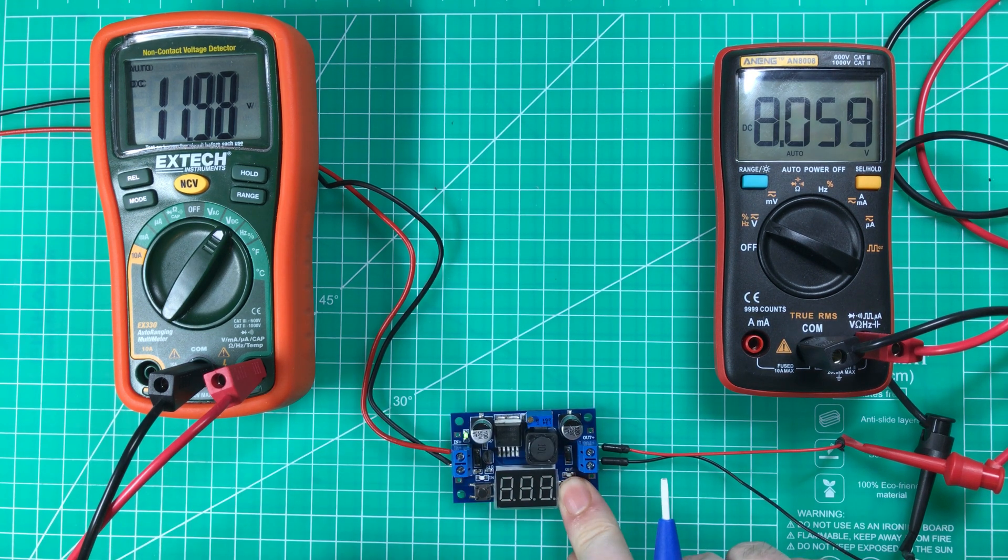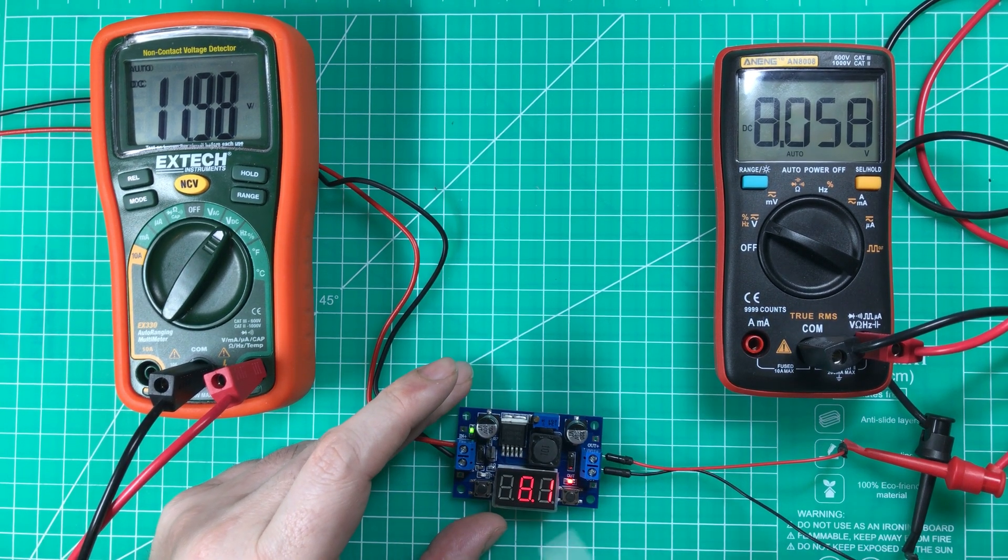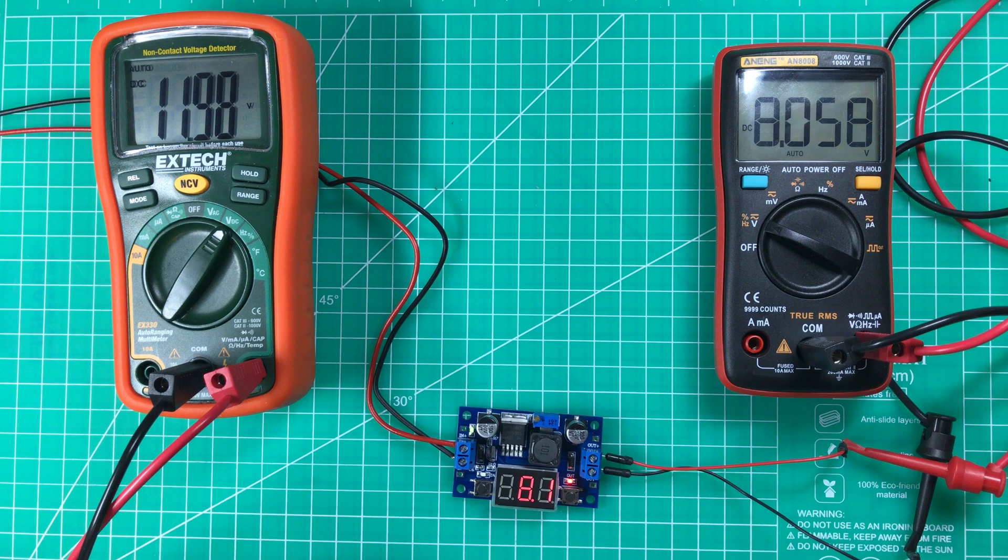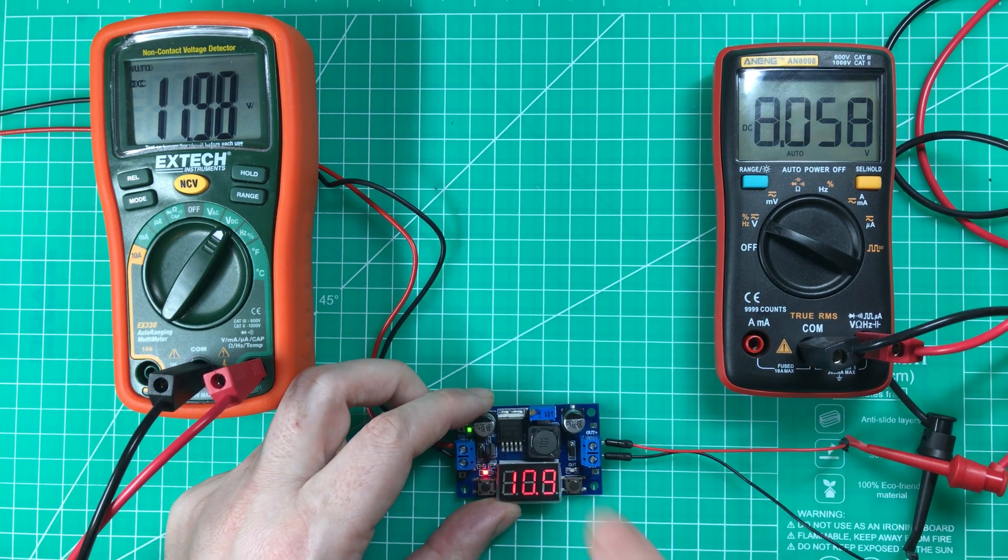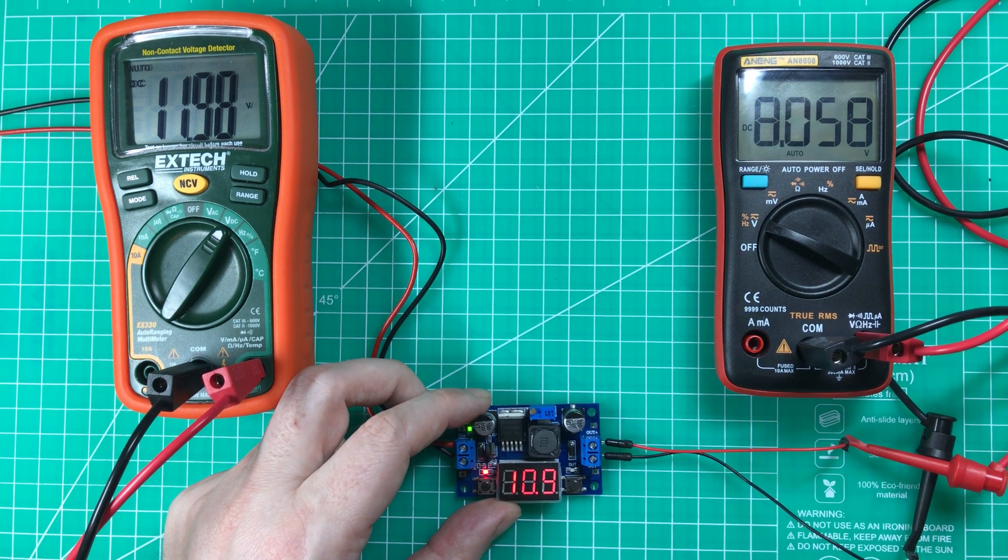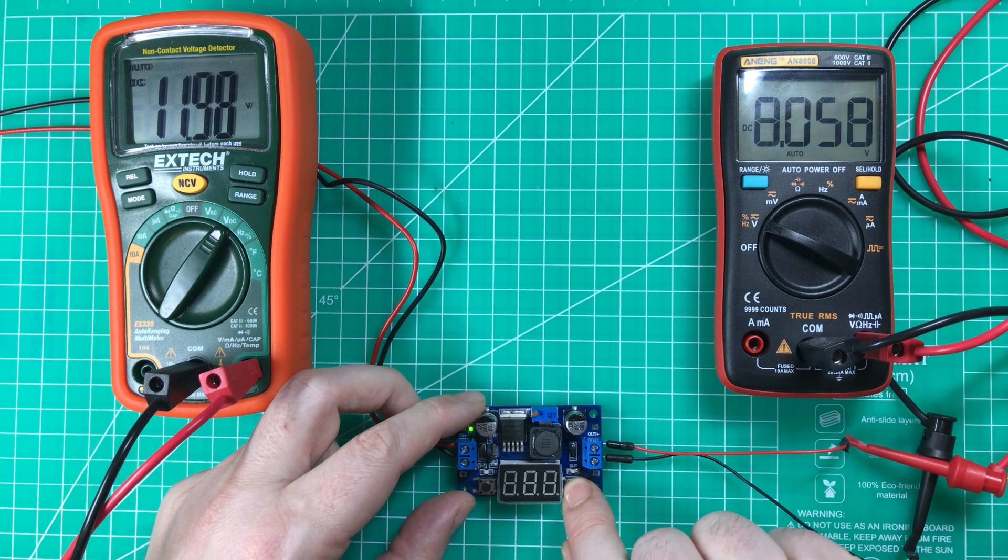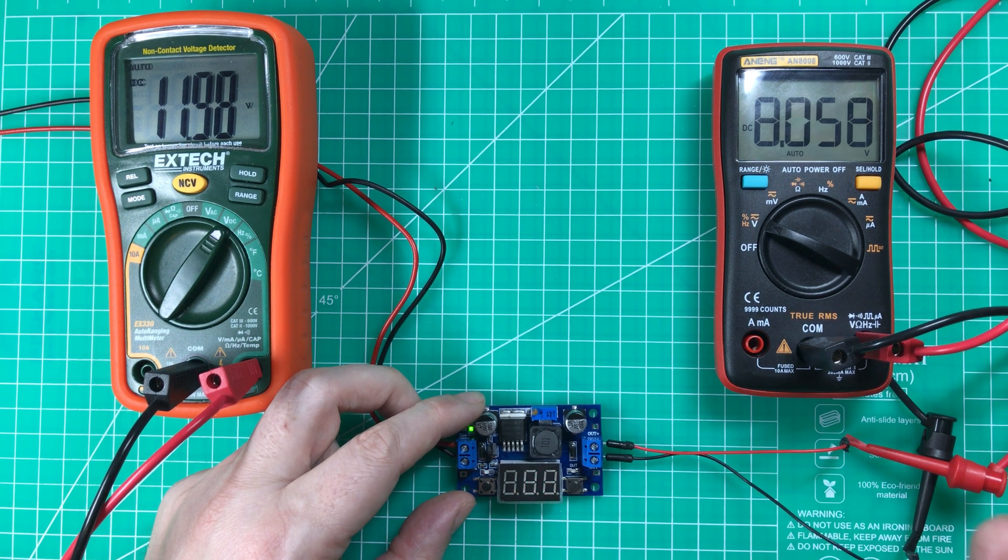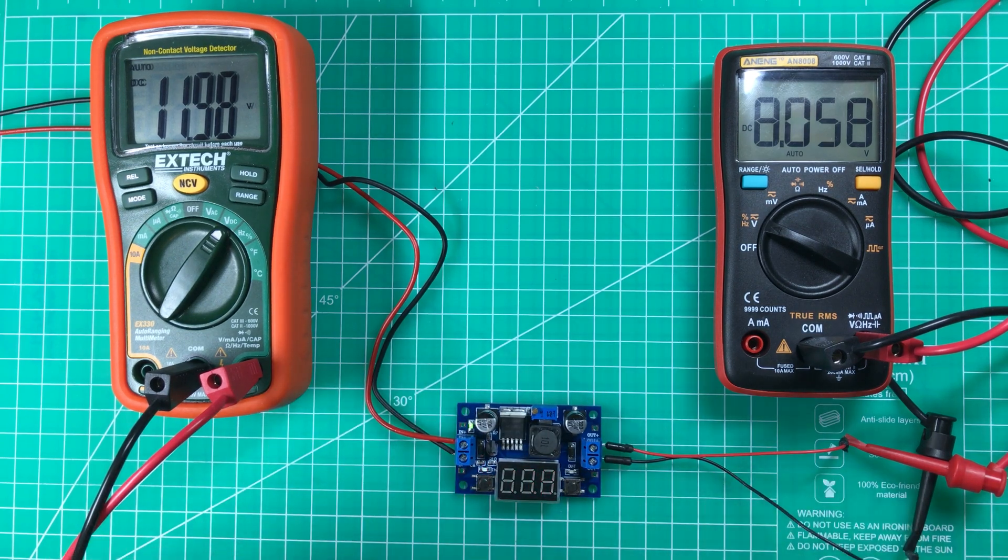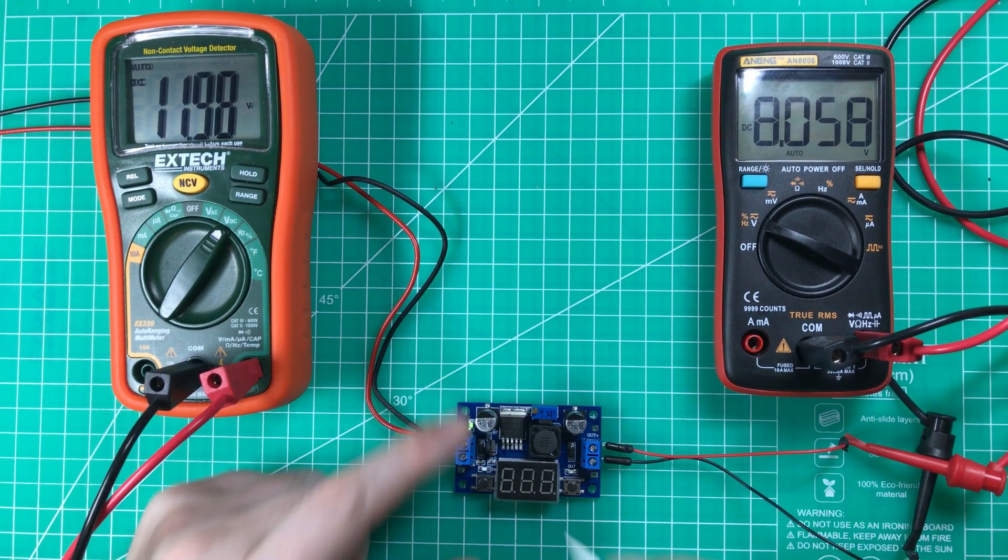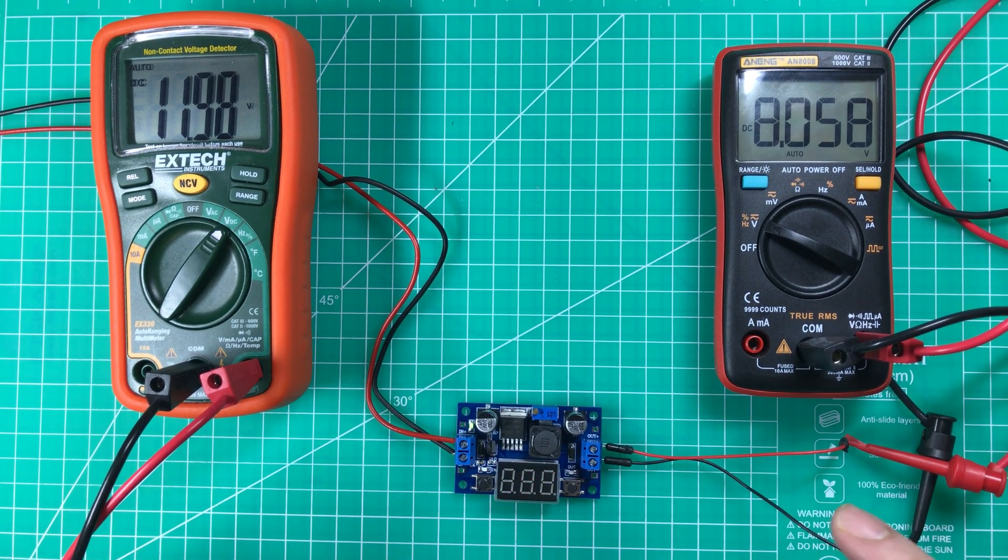Once it's on the right number you press and hold the left button again, sorry the right button again for two seconds, and it returns to the normal mode. Now if I want to calibrate the input, press the button to switch to showing the input voltage, again press and hold the right button two seconds and let go. Throughout this video I've probably been saying right and left the wrong way around, but if I have you'll have to excuse me and I'll try and put up on the screen a correction.